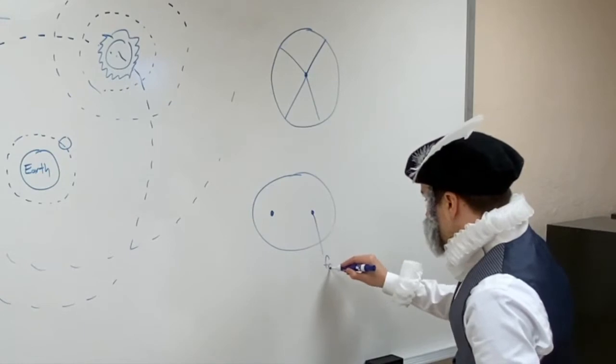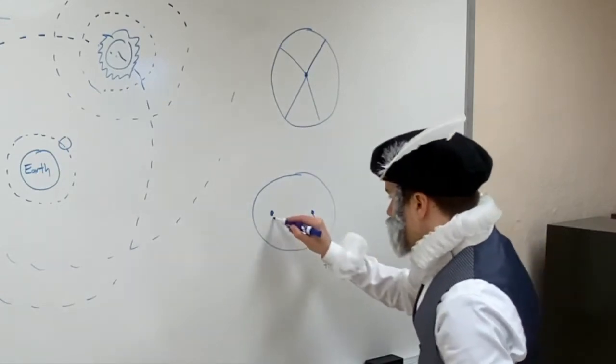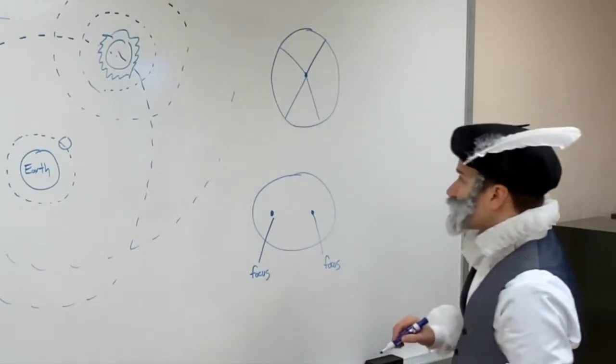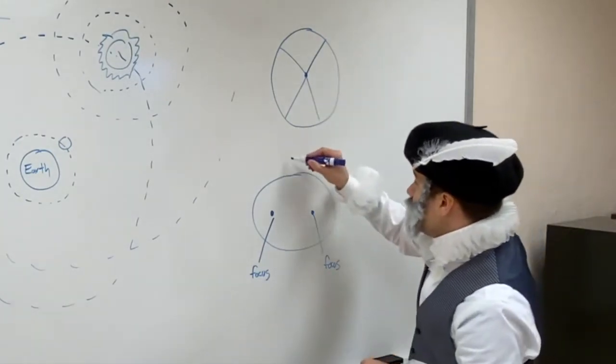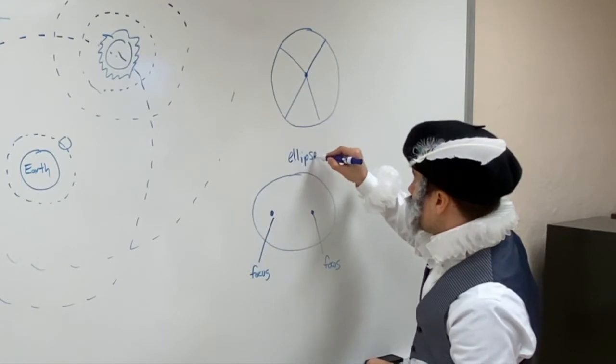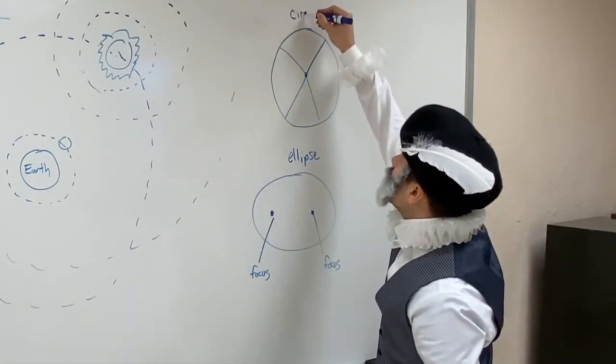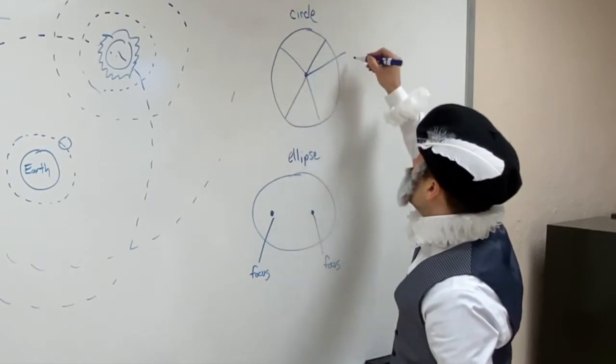So this center has now been stretched out in two different locations. This is a focus, and this is a focus. So this is an ellipse. Focus, focus. And this is a circle with one center.